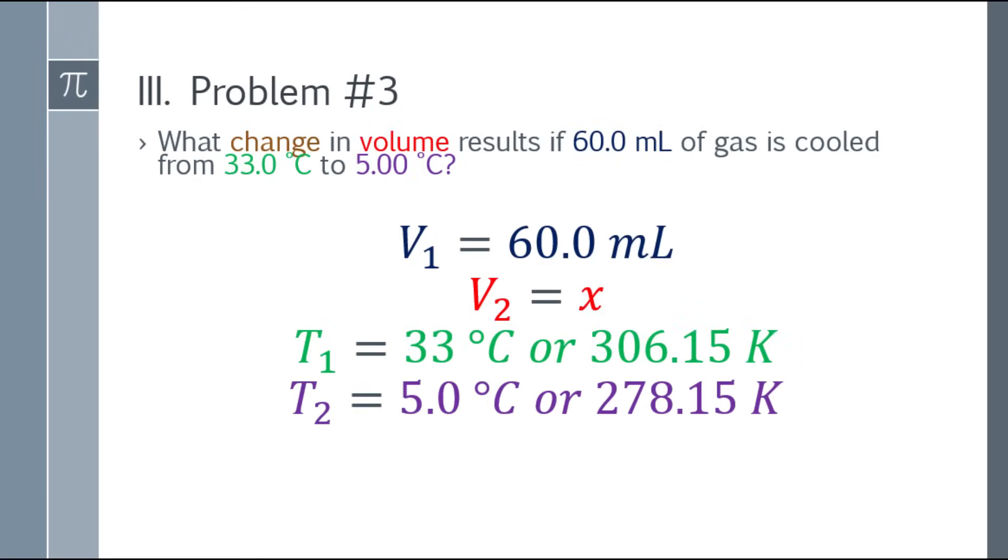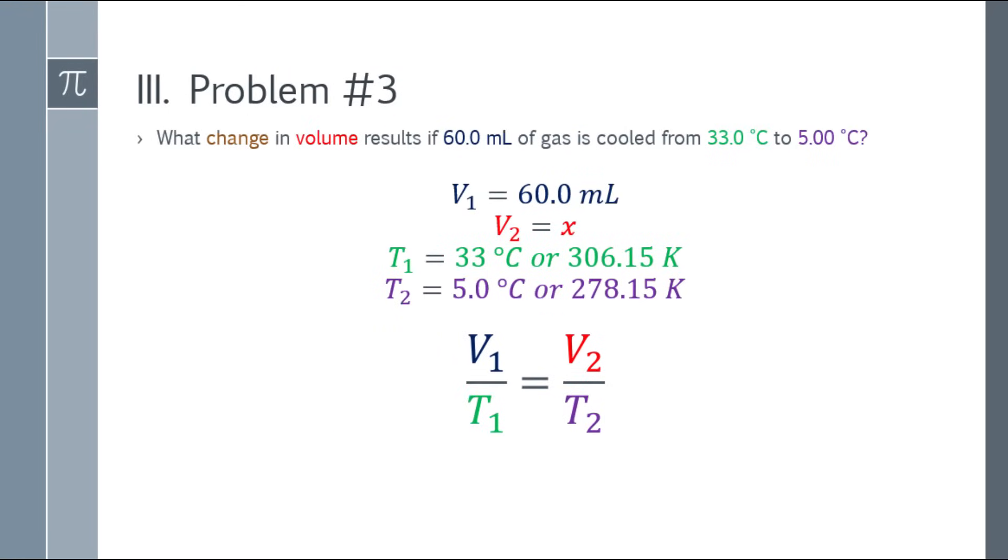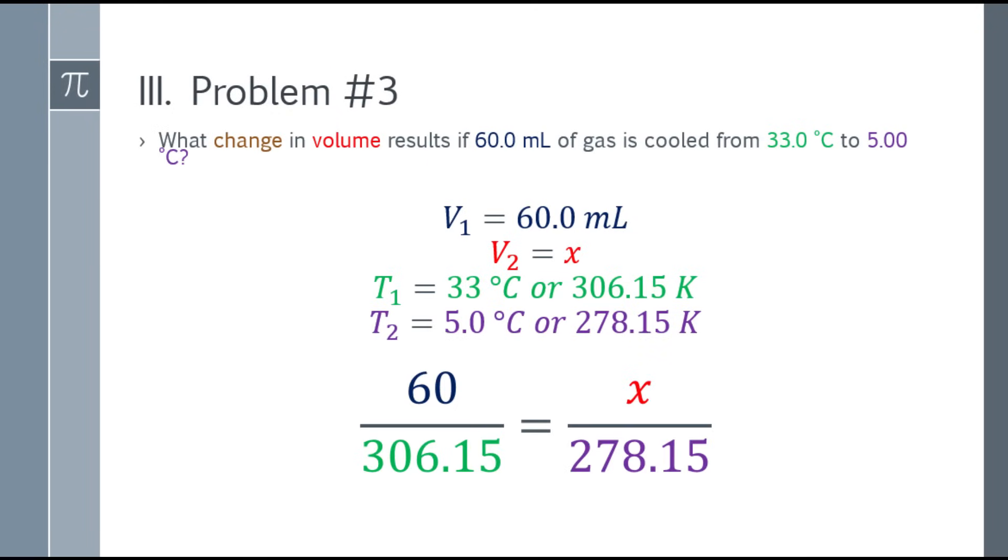So let's start. List the given. Convert Celsius to Kelvin. 33 becomes 306.15, and 5 degrees Celsius becomes 278.15 Kelvin. Next, write the formula. And after that, substitute the values. So that will be 60 over 306.15 equals x over 278.15.